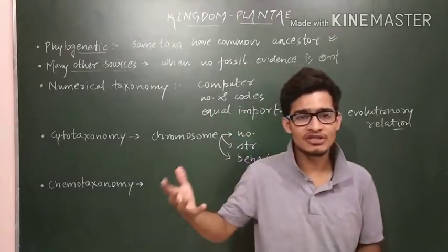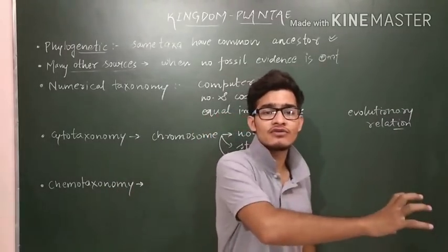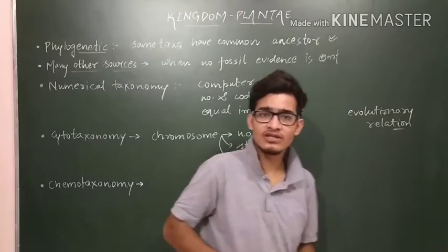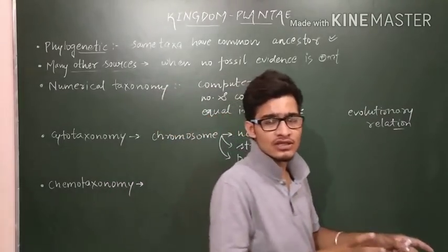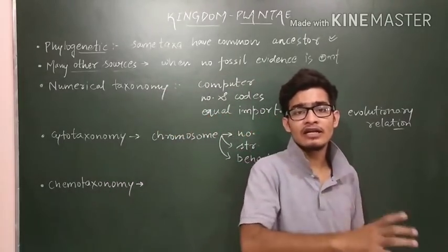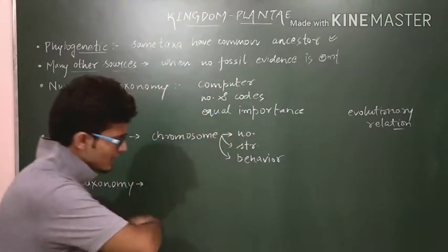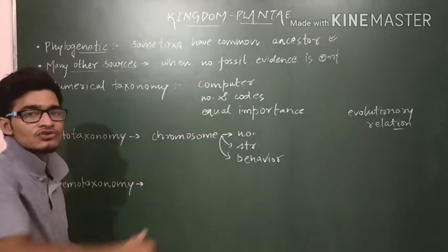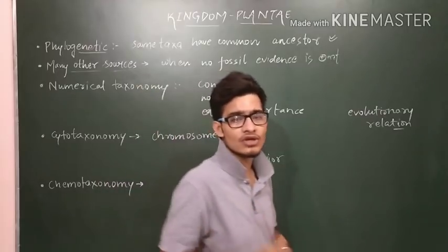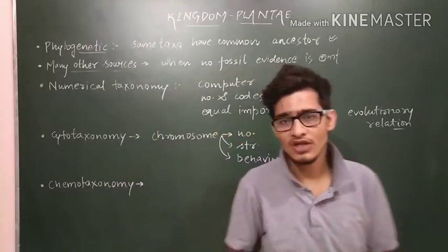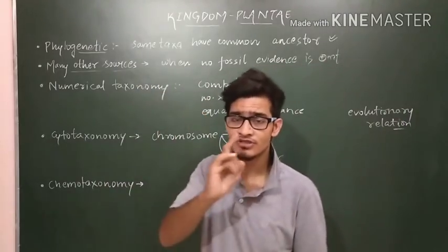There is Ramapithecus, Driapithecus, then different kinds of individuals like Neanderthal man and Cro-Magnon man, and at the end they form Homo sapiens. Similarly, there is an evolutionary sequence for each and every individual — they have changed with time. That's why the phylogenetic system is very important.